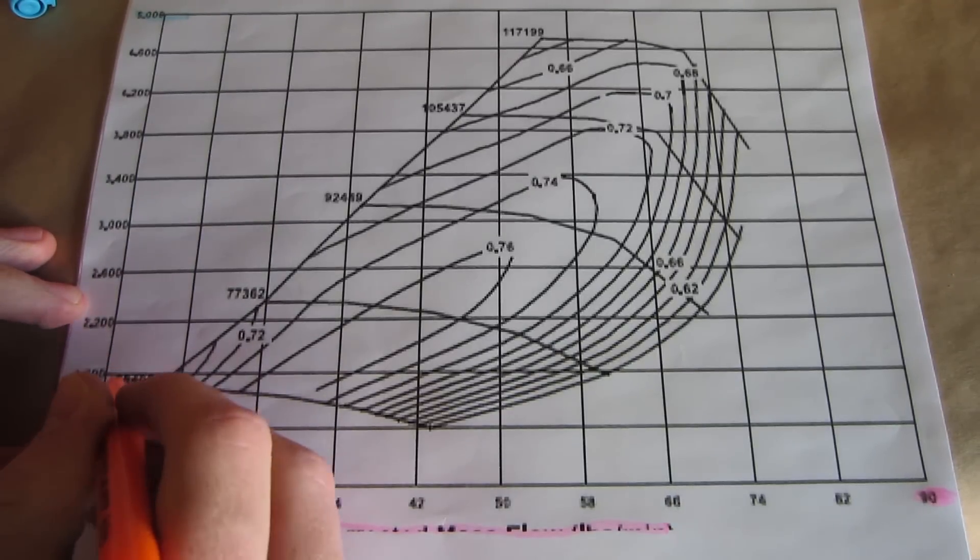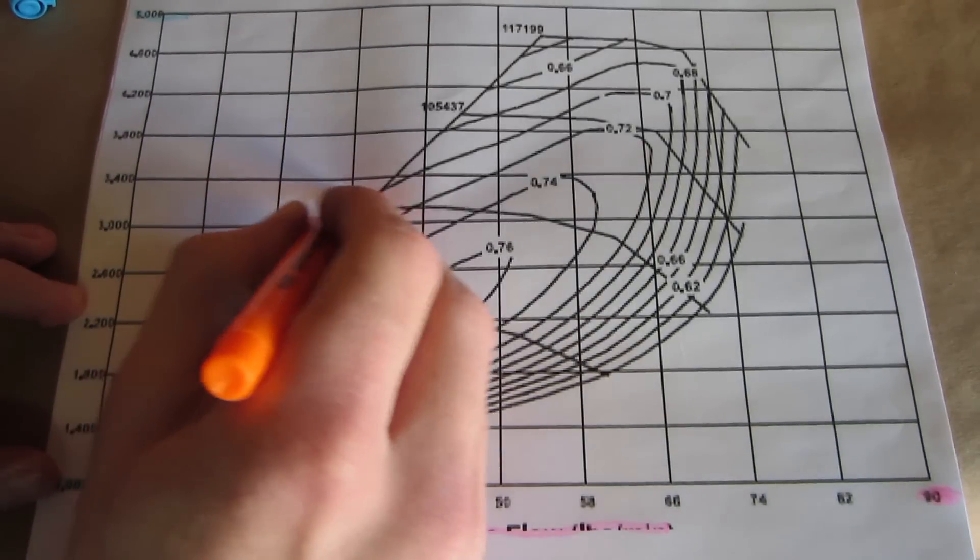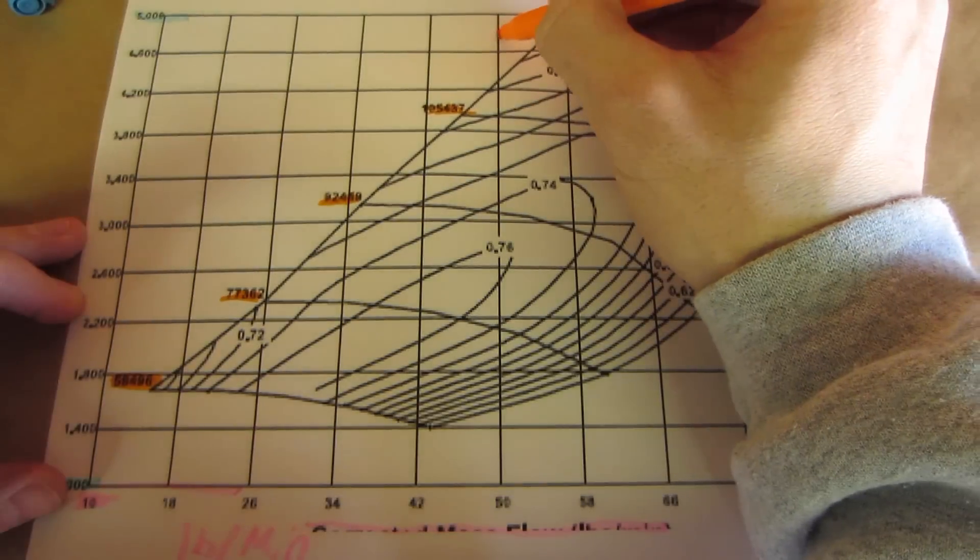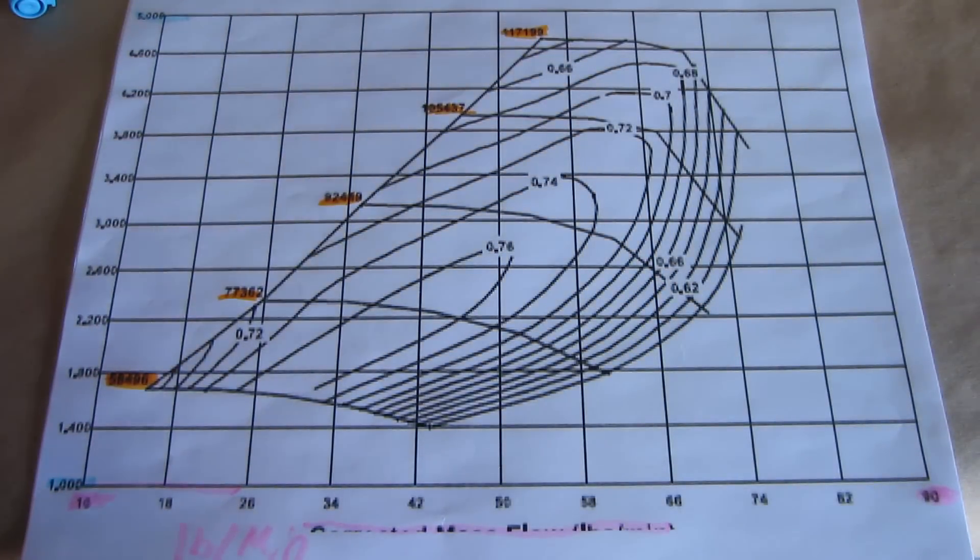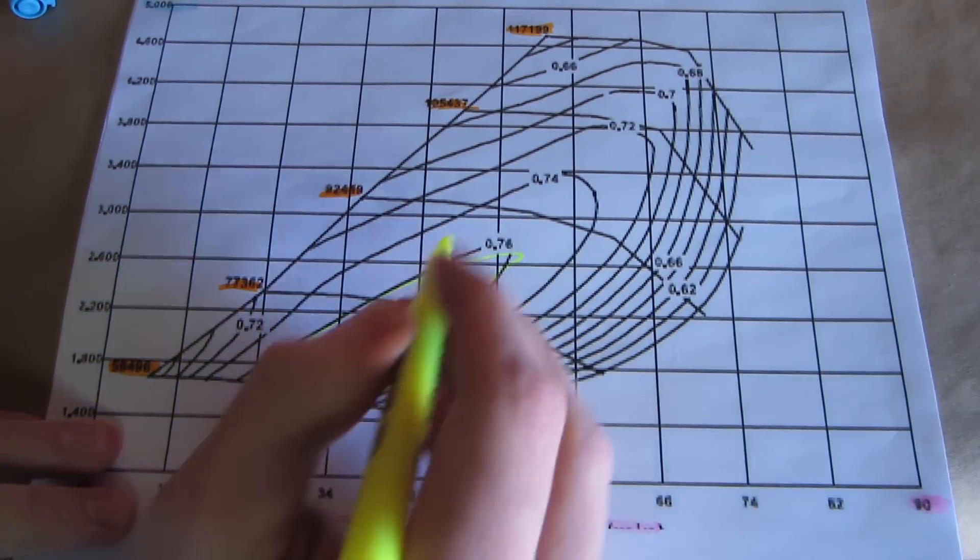The 58,496 represents the shaft speed in RPM. You will notice that these numbers continue to climb as the compressor map moves up and to the right and ending at 117,199 revolutions per minute. We are going to refer to each of these as islands.